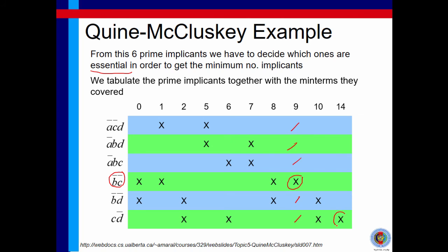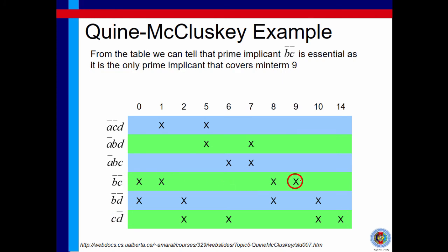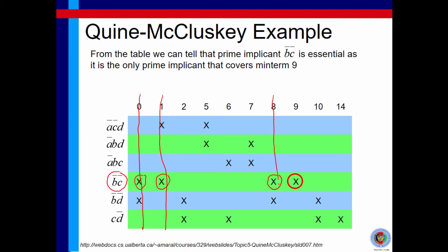We can see that this minterm is also covered by one prime implicant. We do it step by step, starting with B̅C̅ first. Minterm 9 is only covered by B̅C̅, so we take B̅C̅. Because we take this prime implicant, we also take minterms 0, 1, and 8. This means B̅C̅ already covers those minterms, so we cross out those columns — showing what is left after we make it compulsory to include B̅C̅ in our final solution.